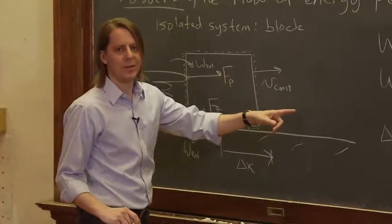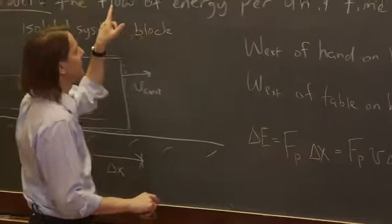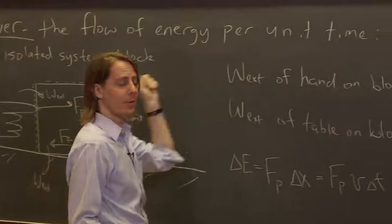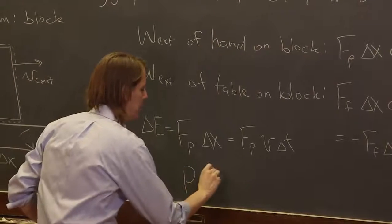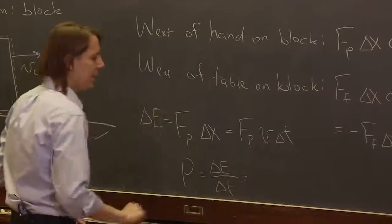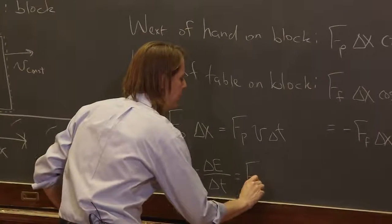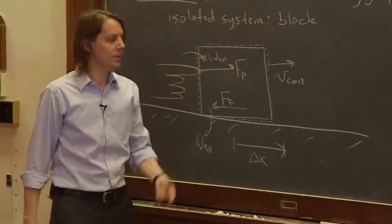Then you could divide through by delta t and you'd get delta E over delta t. That is the flow of energy per unit time. So the power we're dealing with here is delta E over delta t. And in this case, it's just how hard you push times how fast you push it.